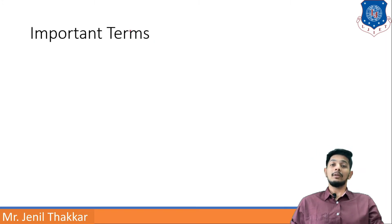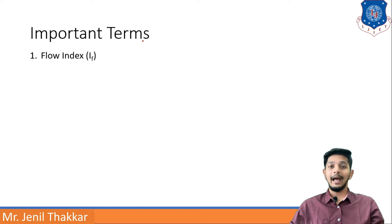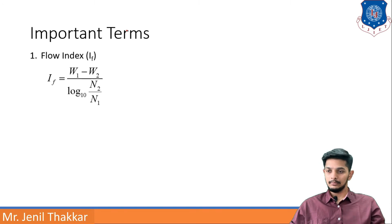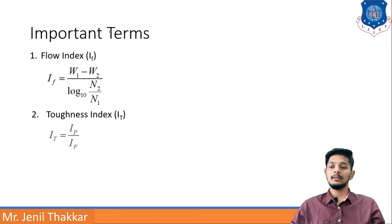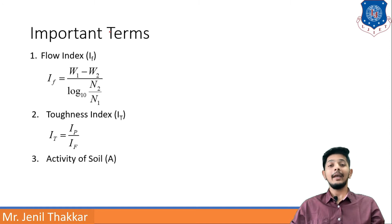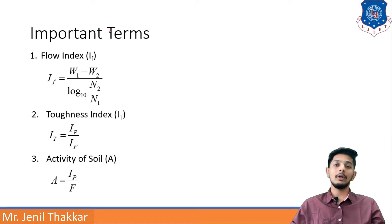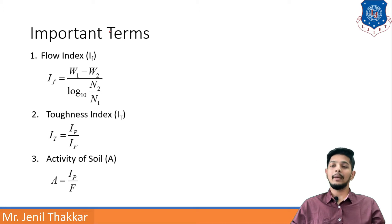Here are some important terms. First is Flow Index IF. Flow Index IF can be defined as: IF = (w1 - w2) / log₁₀(n2/n1). Toughness Index IT can be defined as IT = IP / IF, where IP is plasticity index and IF is flow index. Activity of soil, capital A, can be defined as A = IP / F, where F is the fraction passing from 75 micron.